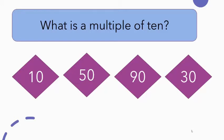Now we have learned that multiples of 10 are those numbers that end with a zero, and here are a few examples of multiples of 10: 10, 50, 90, and 30. I'm sure you can name a few others.